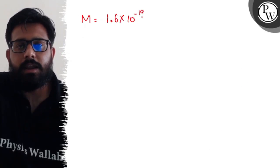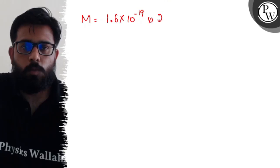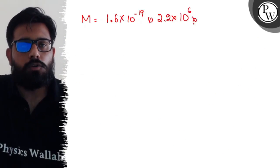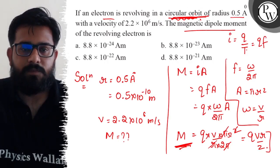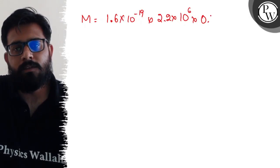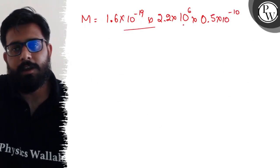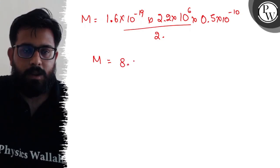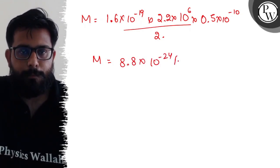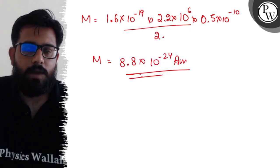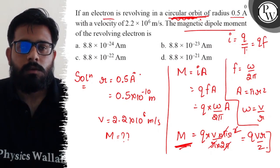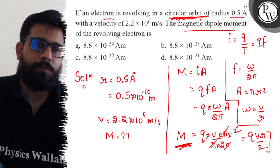The charge on the electron is 1.6 × 10⁻¹⁹ C, velocity is 2.2 × 10⁶ m/s, and radius is 0.5 × 10⁻¹⁰ m. Substituting into M = QVR / 2: M = (1.6 × 10⁻¹⁹ × 2.2 × 10⁶ × 0.5 × 10⁻¹⁰) / 2 = 8.8 × 10⁻²⁴ A·m.